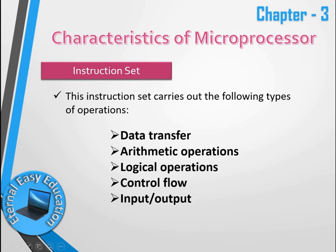The ALU and memory unit are controlled by the control unit, so control flow operations are possible. Input/output operations mean the microprocessor can receive input from a device and send the result — the output — to an output device. These are the types of instructions a microprocessor can execute.